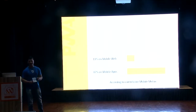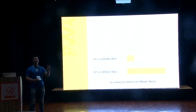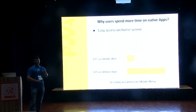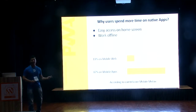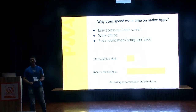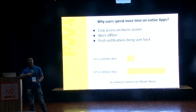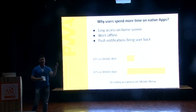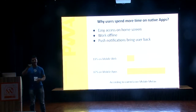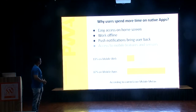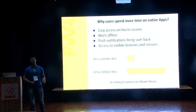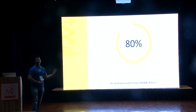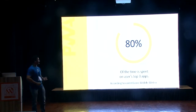Easy to access — you just go onto your home screen and you have the app with shortcuts, straight into it. They work offline; at least many of the features do. You have push notifications which bring the user back — even if your application is closed and you get a notification, you get that back. For example, when you order food on Swiggy and close the application, you get a notification that the driver is on the way or the food is being prepared. There is also access to mobile features and sensors like camera. And 80% of the time is spent on users' top three apps.